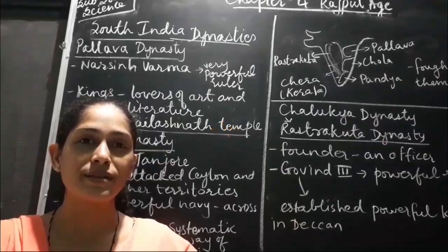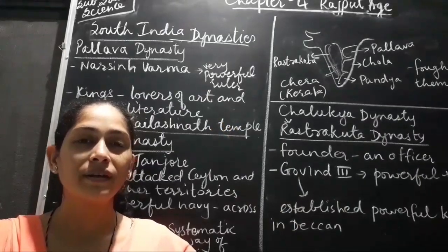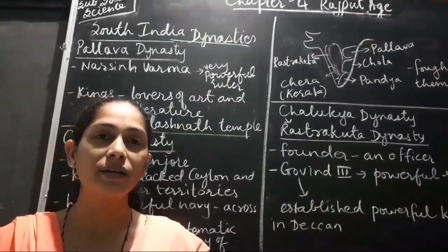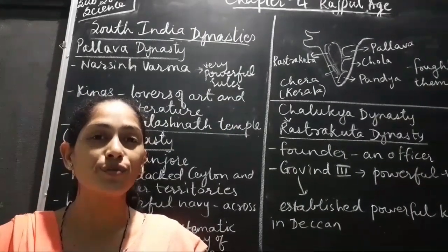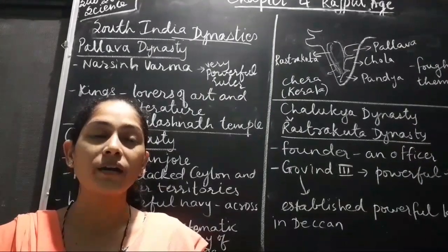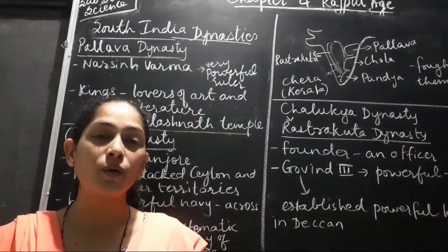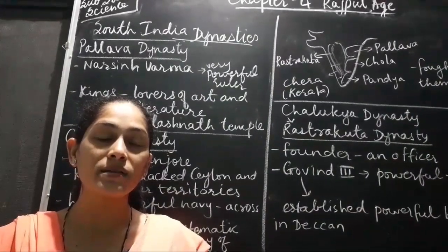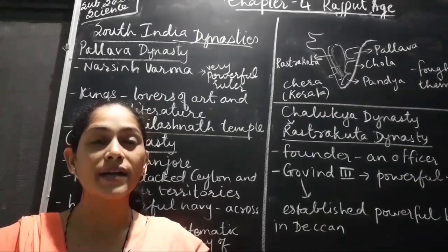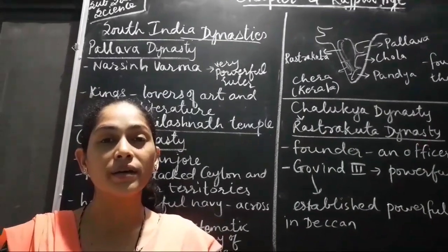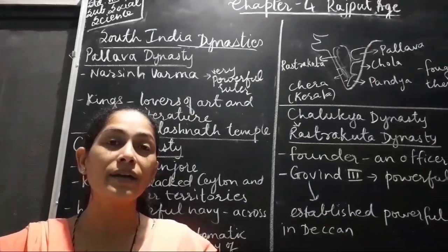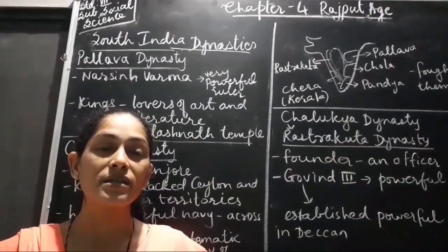Hello students of 7th standard. In the previous video we had learnt about the dynasties of North India. We had learnt how feudalism came into existence and slowly and gradually all the small kingdoms emerged and different dynasties were there.